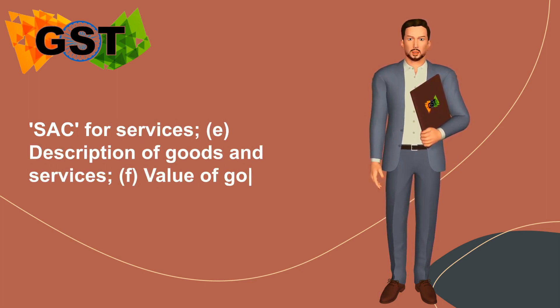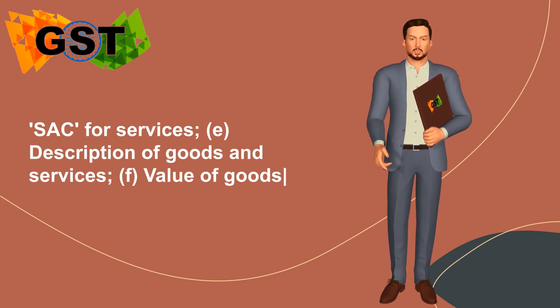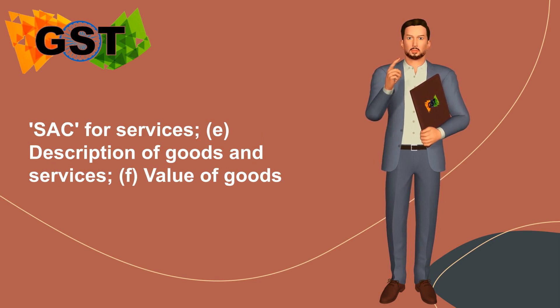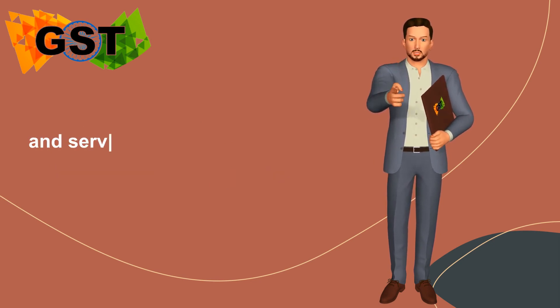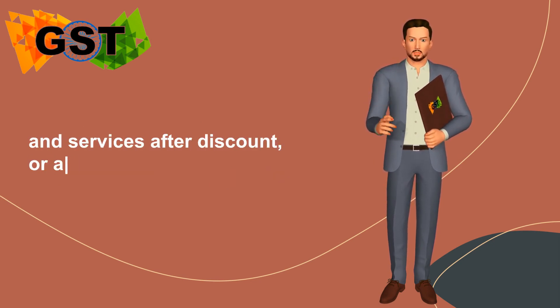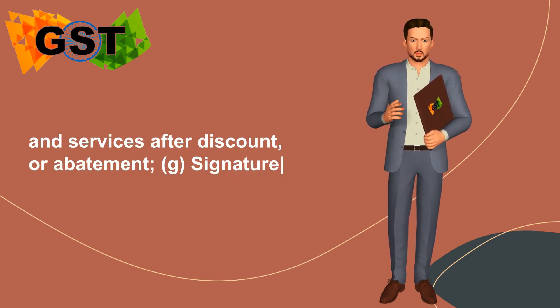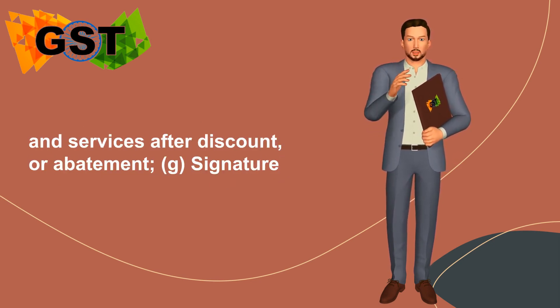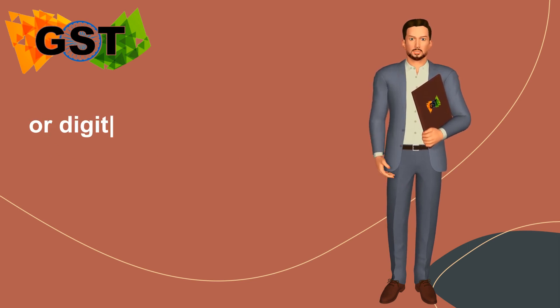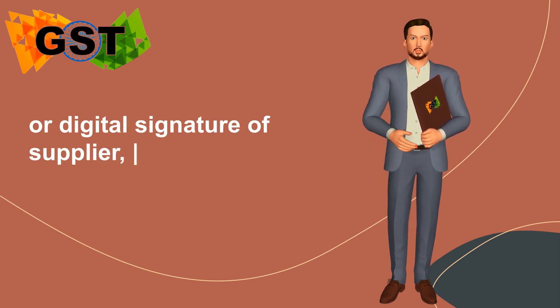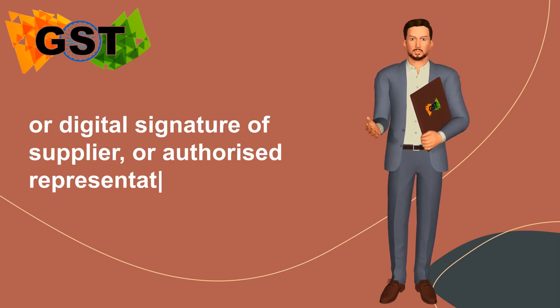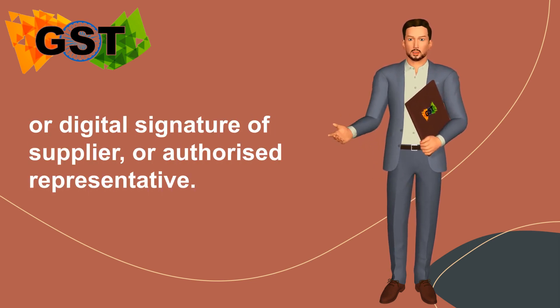e. Description of goods and services. f. Value of goods and services after discount or abatement. g. Signature or digital signature of the supplier or authorized representative.